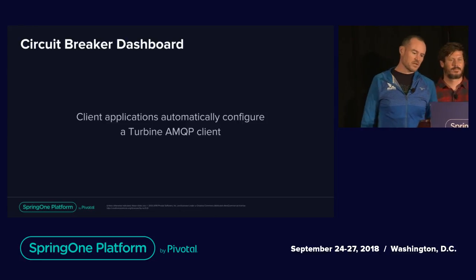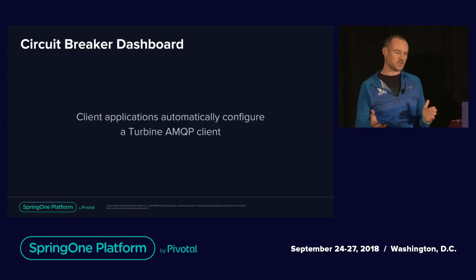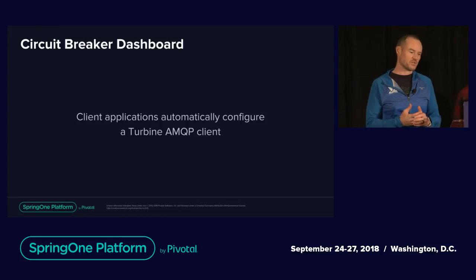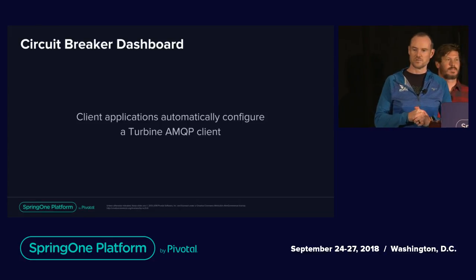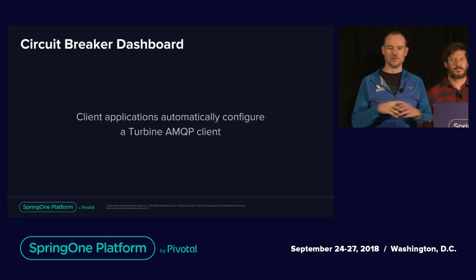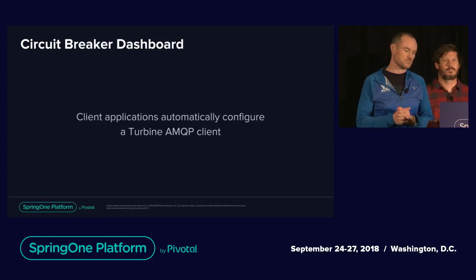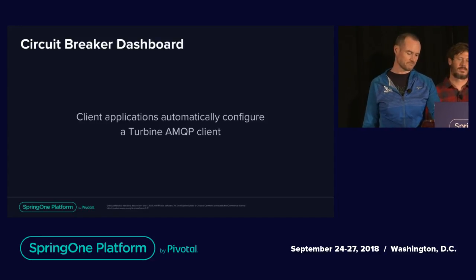For client applications, if you include SCS starters you're going to automatically configure a Turbine AMQP client within your application, so it will know how to broadcast circuit breaker information to the RabbitMQ server.